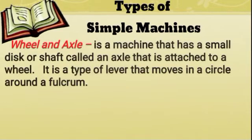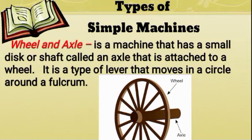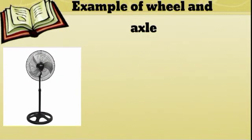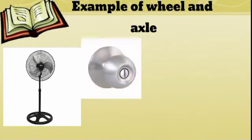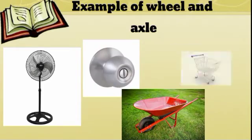Wheel and axle is a machine that has a small disc or shaft called an axle that is attached to a wheel. It is a type of lever that moves in a circle around a fulcrum. Here are some examples of wheel and axle: electric fan, doorknob, wheelbarrow, and pushcart.